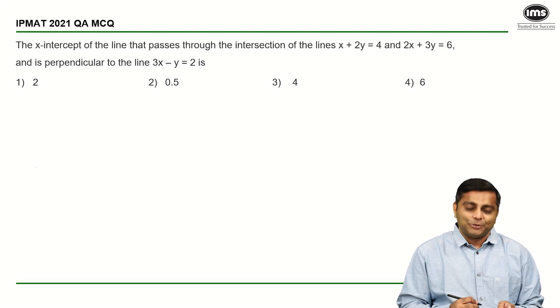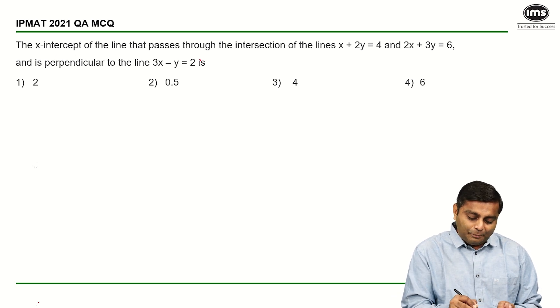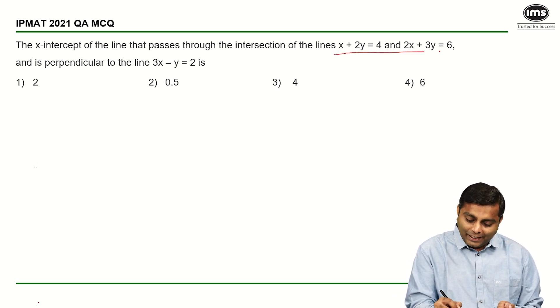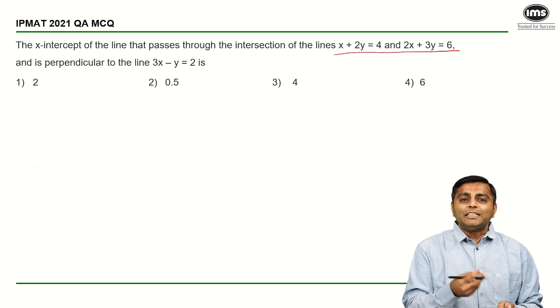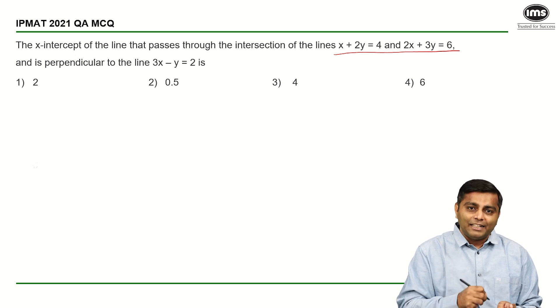Okay, let's start with the solution. The first part is the x-intercept of the line that passes through the intersection of the two lines. Intersection of the two lines means we are going to solve the two equations simultaneously and find out the values of x and y. That's the coordinate or the point through which the line is passing.